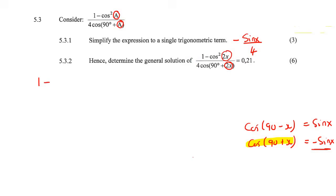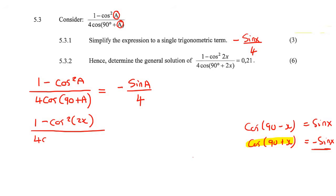So we learnt in the previous question that 1 minus cos squared a over 4 cos 90 plus a, we learnt in the previous question that that becomes minus sin a over 4. Sorry, I did apologize, but I was using x's the whole time. We know that that turns into that. So then what they want us to do is to think about what would this become then? Well, you can just follow what we did here, but you don't have to go do everything, because they said hence, so we're using the previous answer.